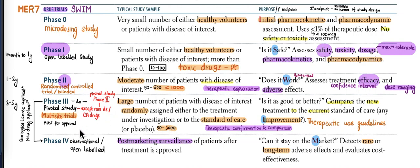Phase 4 is the post-marketing surveillance, which is an observational study. It detects rare long-term adverse effects. New drug application and licensing must be done between Phase 3 and Phase 4.